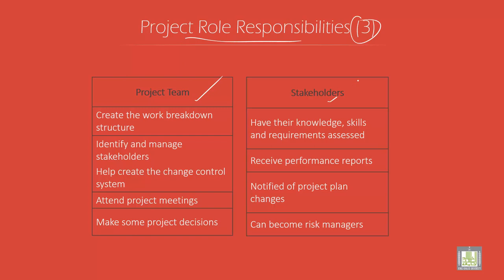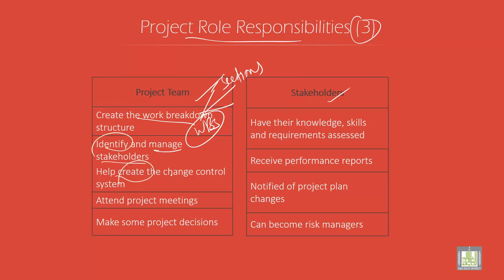Project team and stakeholders. The project team creates the work breakdown structure — what to be done and when to be done, broken into various sections. They also identify and manage stakeholders and help create the change control system.